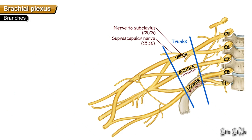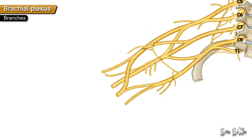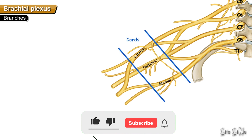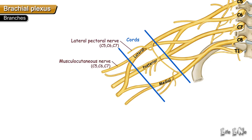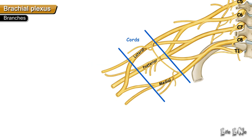The nerve to subclavius, as the name suggests, supplies the subclavius muscle and also gives off the accessory phrenic nerve. So the accessory phrenic nerve comes from the nerve to subclavius. The branches from the lateral cord of the brachial plexus are the lateral pectoral nerve, musculocutaneous nerve, and the lateral root of the median nerve — remembered with the mnemonic LML.